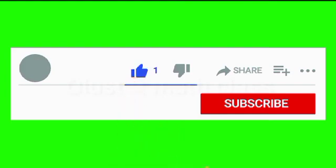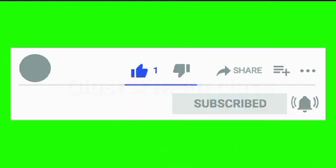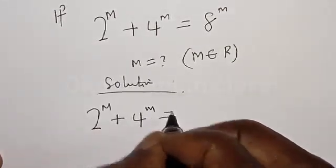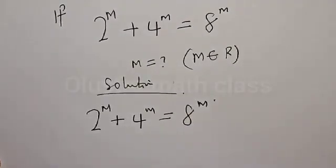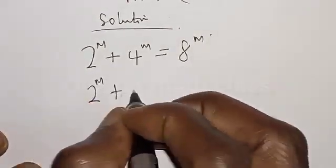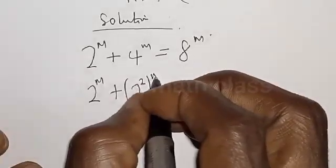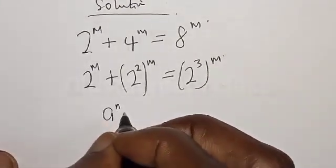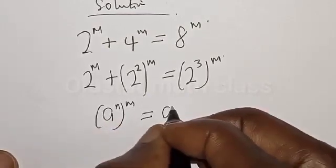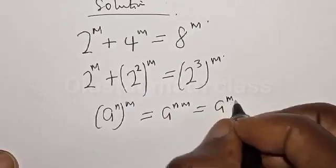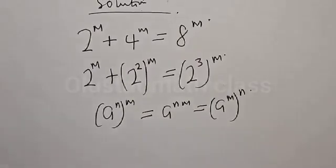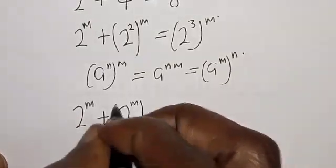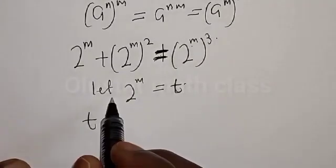Please don't forget to like, share, comment and subscribe. Solution: we have the given equation 2 raised to power m plus 4 raised to power m is equal to 8 raised to power m. This can be expressed as 2 raised to power m plus 2 squared raised to power m is equal to 2 cubed raised to power m. Then we let 2 raised to power m equal to t.